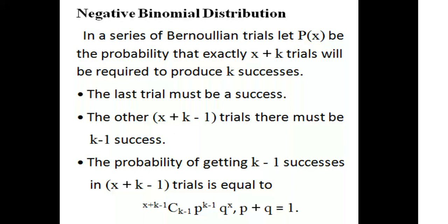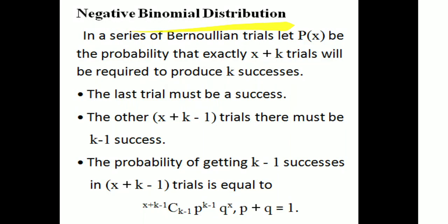Next, we are looking at the negative binomial distribution. In a series of Bernoulli trials, let P(X) be the probability that exactly X plus K trials will be required to produce K successes. For K successes in the count, X plus K trials are needed, and the last trial must be a success.